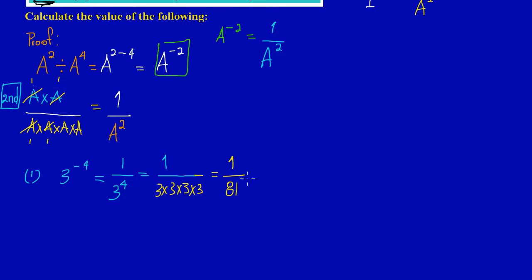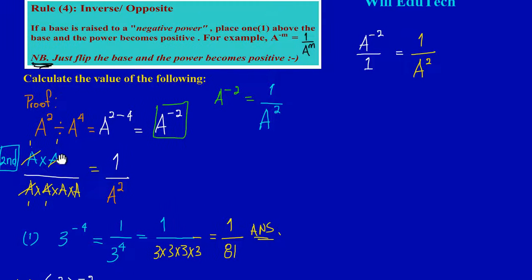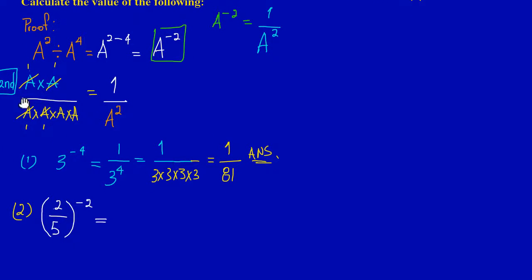That answer is one upon eighty-one. Now for part two: let's take two-fifths raised to the negative two. Since it's the inverse rule and we have a fraction, all we do is flip the fraction and the power becomes positive.